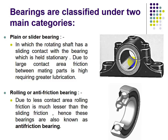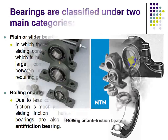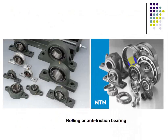Rolling bearings are also known as anti-friction bearings because there is less contact between the rolling elements and the shaft and bearing, so friction is very low and can be neglected. Due to the less contact area, rolling friction is much lesser than sliding friction, hence these bearings are also known as anti-friction bearings.